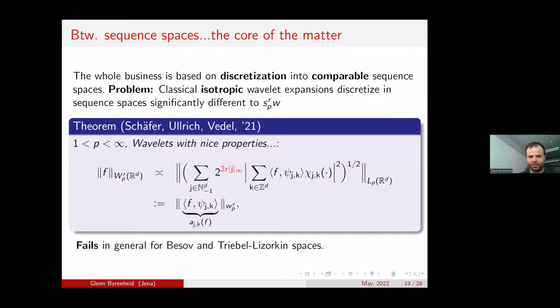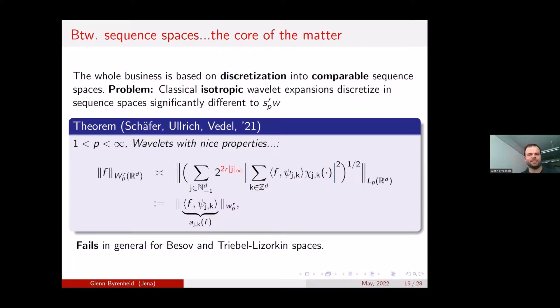This is the key point: the comparable wavelet sequence bases for both mixed and isotropic smoothness spaces allow us to directly compare and use them together.